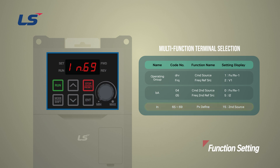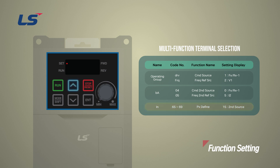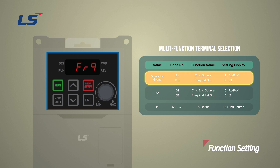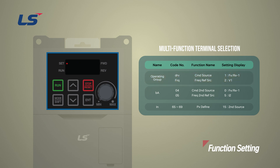In this video, we will set the second operation function to P5 terminal 69. Original operation is set in operation group DRV and FRQ, and the setting of operation method is set in BA group 4 and 5.